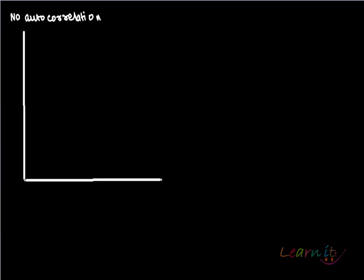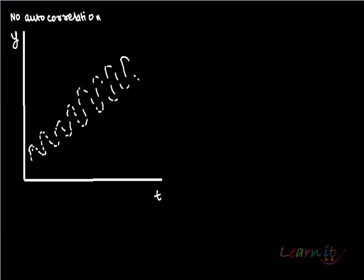So with y and t, if your errors have this kind of structure - this might be like a seasonality kind of structure.